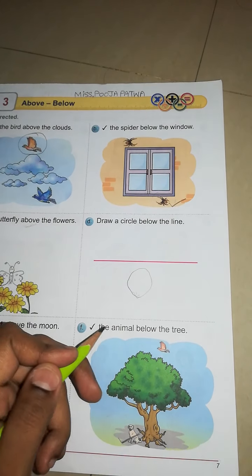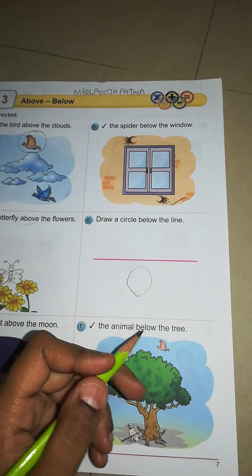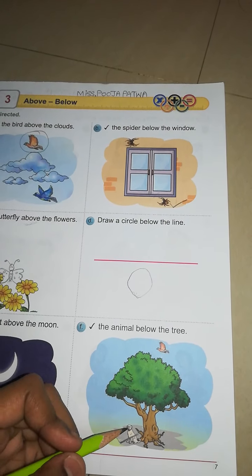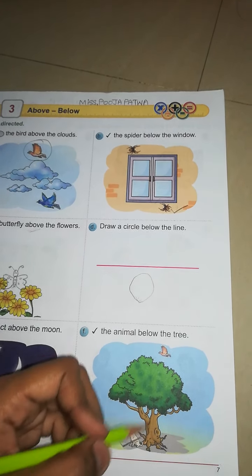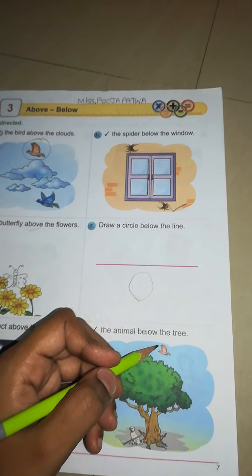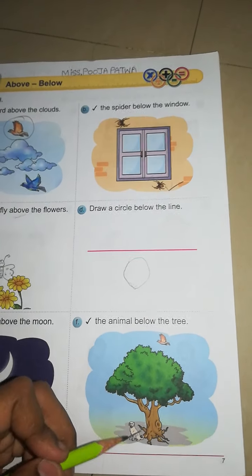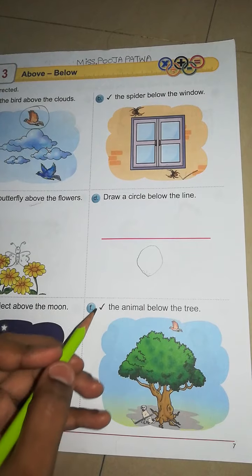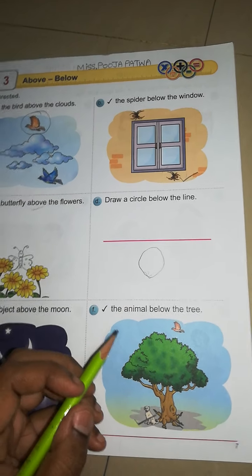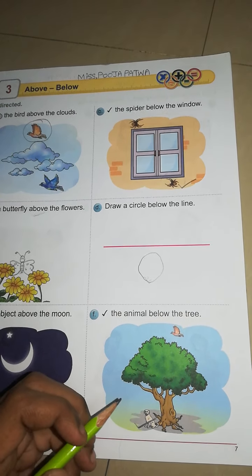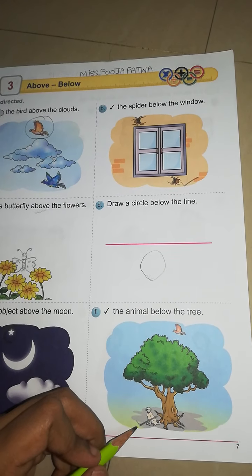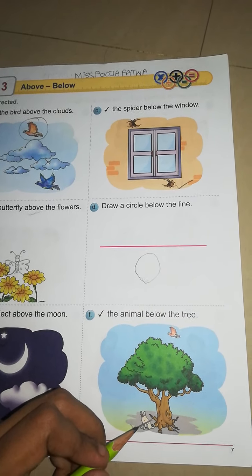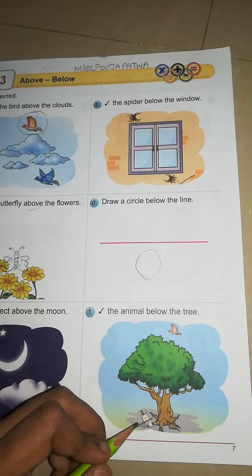F: Take the animal below the tree. This is your tree. Above the tree a bird is given, and below the tree a dog is given. Now, which one do you take? Take the below picture — take your dog, because the dog is shown below.